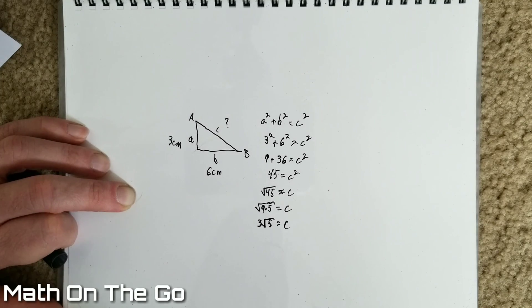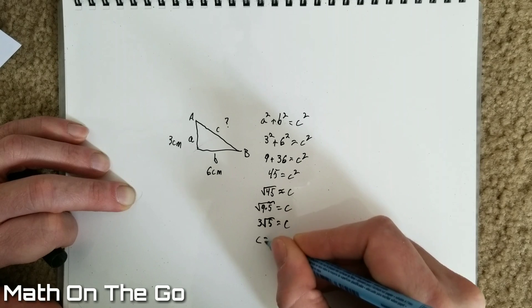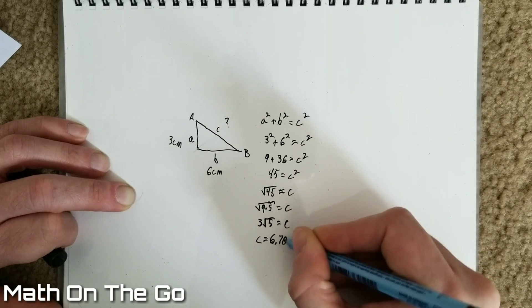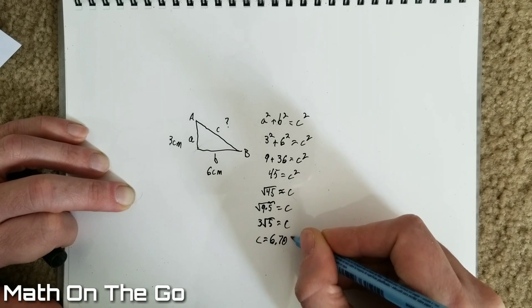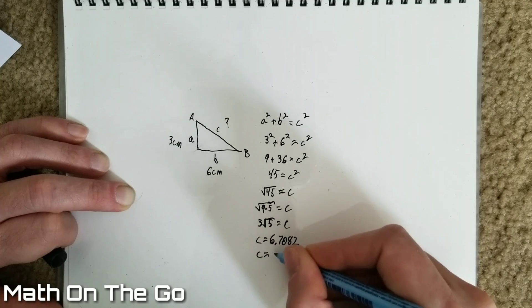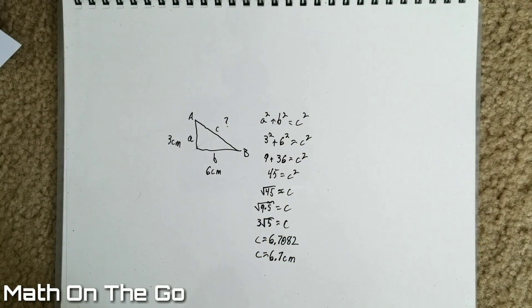Now, if we plug that into our calculator, we find out that C equals six point seven zero eight two. And I will round it to just C equals six point seven centimeters, which is the shortest walk the ant could take.